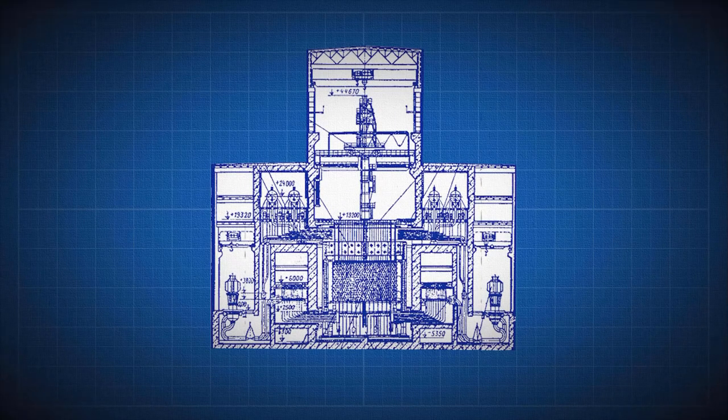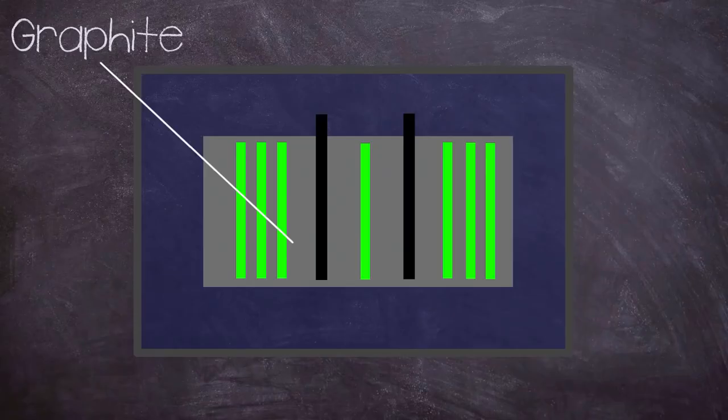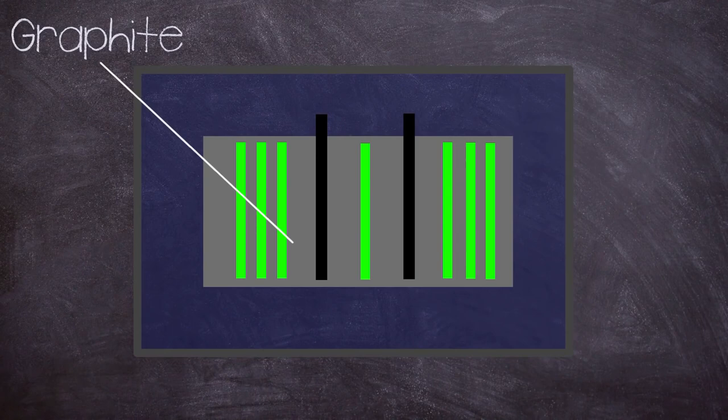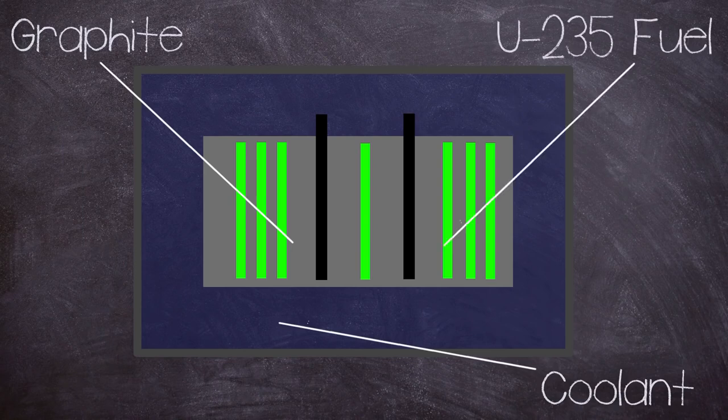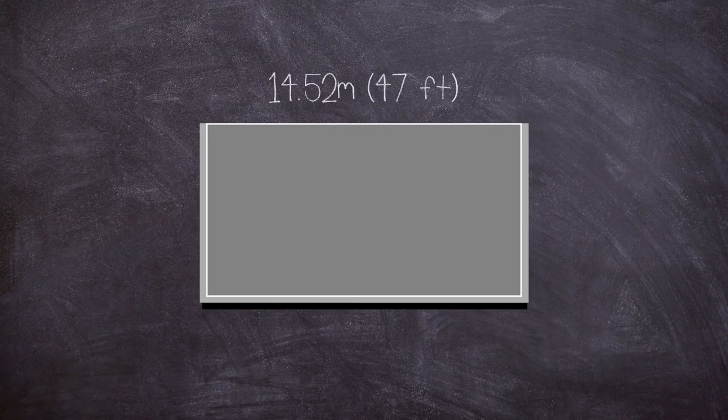The RBMK was a unique design, a product of evolution using graphite to moderate the chain reaction with light water as coolant. This combination allowed it to use lower enrichment uranium-235 for fuel, significantly cheaper than other reactor designs. The RBMK had a very large core region consisting of a height of seven meters and diameter of 11.8 meters, mounted in a steel cylinder placed on top of a biological shield inside a reinforced concrete lined pit.